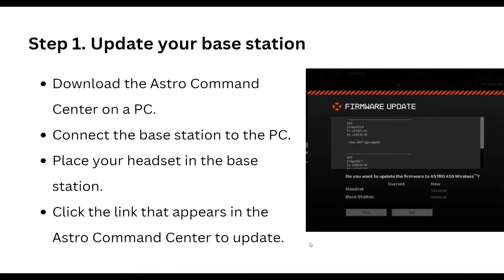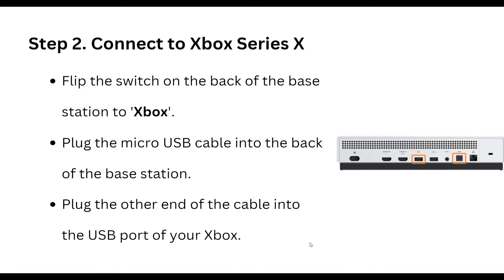First step: update your base station. Download Astro Command Center on your PC, then connect the base station to the PC. Place your headset in the base station, click the link that appears in the Astro Command Center to update, and then connect to Xbox Series X.